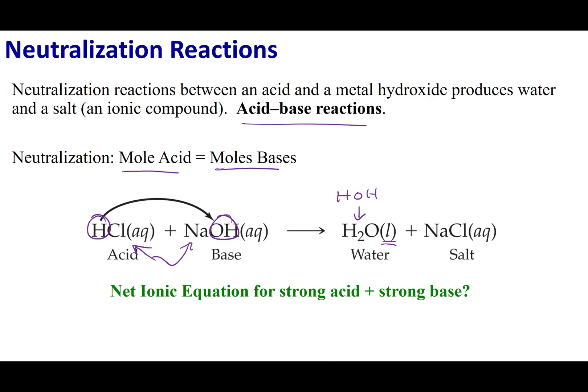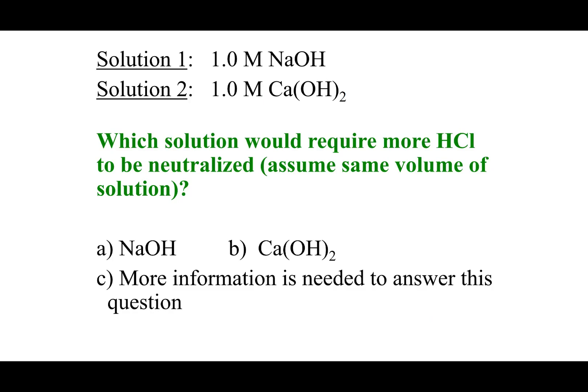Now, if I want to look at the net ionic equation for a strong acid and a strong base coming together, that's going to be H plus, plus OH minus, gets me H2O liquid. And this is going to be the net ionic equation for all strong acid-base titrations.